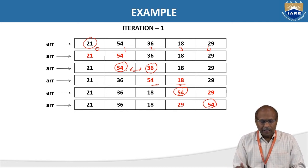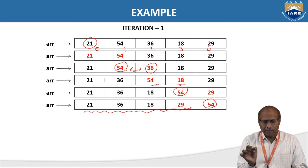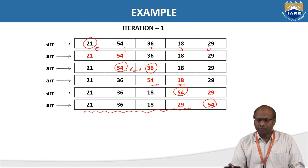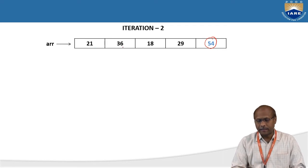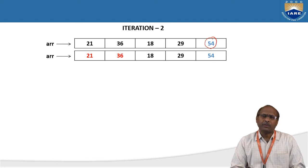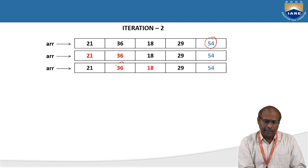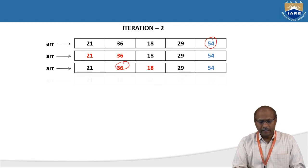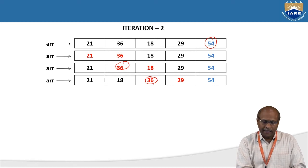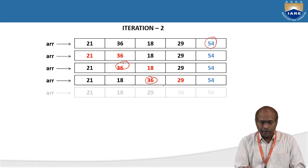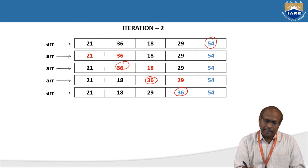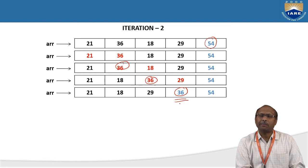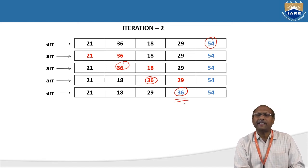Now the second iteration begins. In the second iteration, it will go up to the second-to-last position, because after every iteration the biggest element goes to the end. Already 54 has reached the end. Now the remaining elements are 21, 36, 18, 29. Compare 21 with 36: 21 is smaller, no need to interchange. Then compare 36 with 18: 36 is bigger, so swap. 36 is also greater than 29, so swap again. At the end of the second iteration, 36 has come to the last-but-one position.